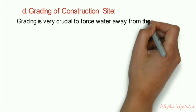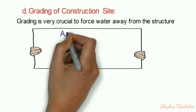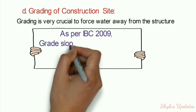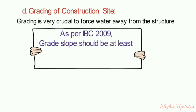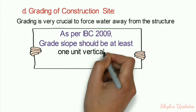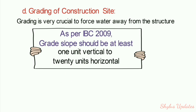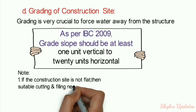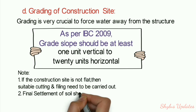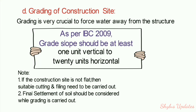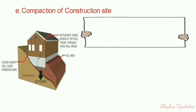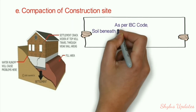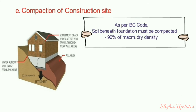Grading of the construction site is crucial to force water away from the structure. As per IBC 2009, grade slope should be at least 1 unit vertical to 20 units horizontal. If the site is not flat, suitable cutting and filling must be carried out. Final settling of soil should be considered during grading. As per IPC code, soil beneath the foundation must be compacted to 90% of maximum dry density.